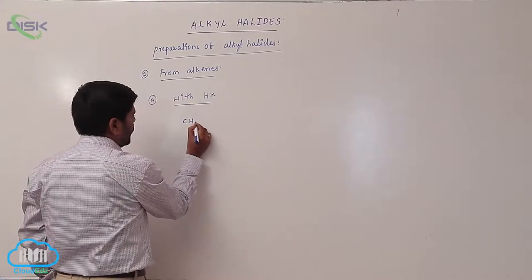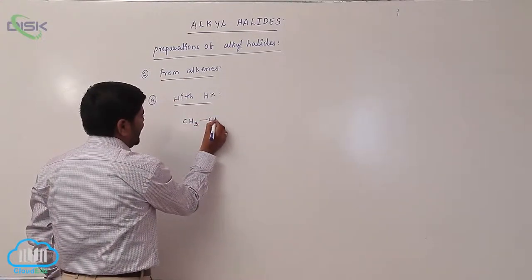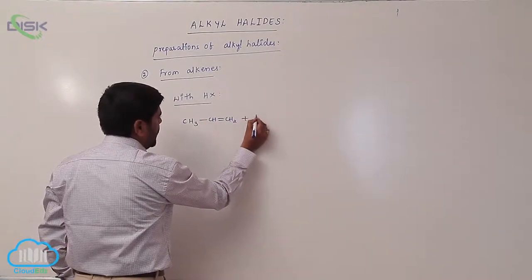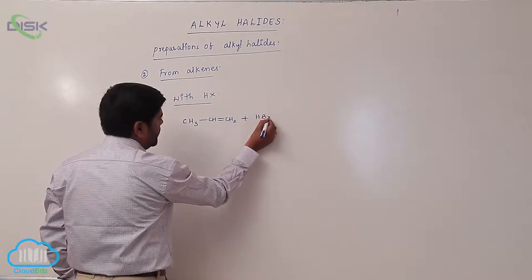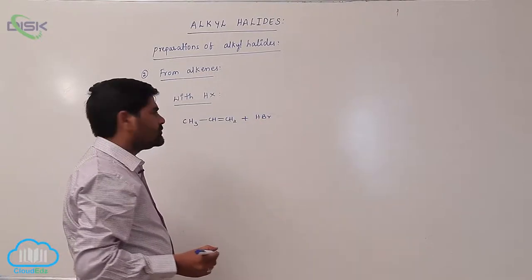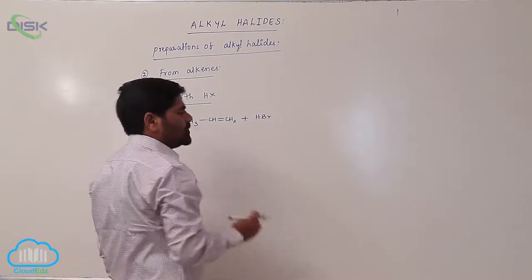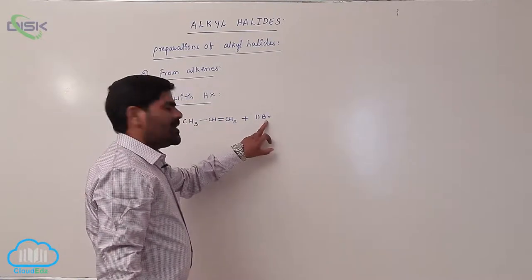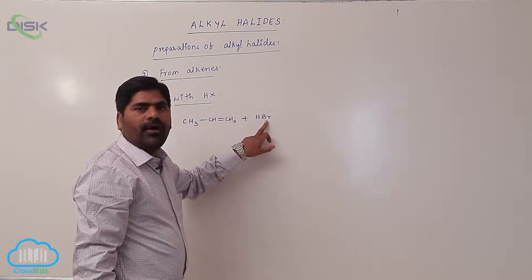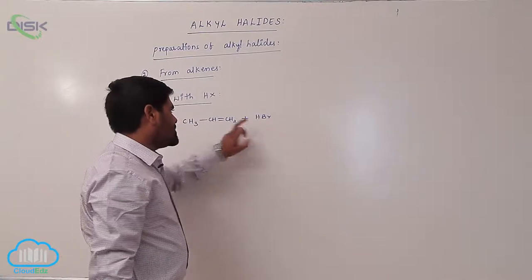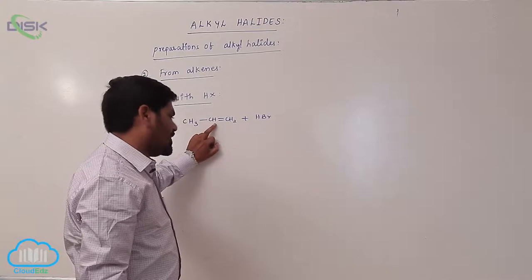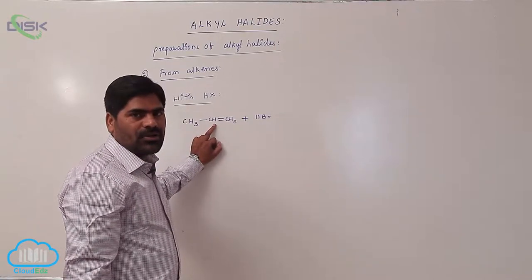For example, CH3-CH=CH2 when reacting with hydrogen bromide (HBr), which is H+ and Br-, the Br- can act as a nucleophile. This Br- always adds to the double bond carbon atom which contains the lesser number of hydrogens.